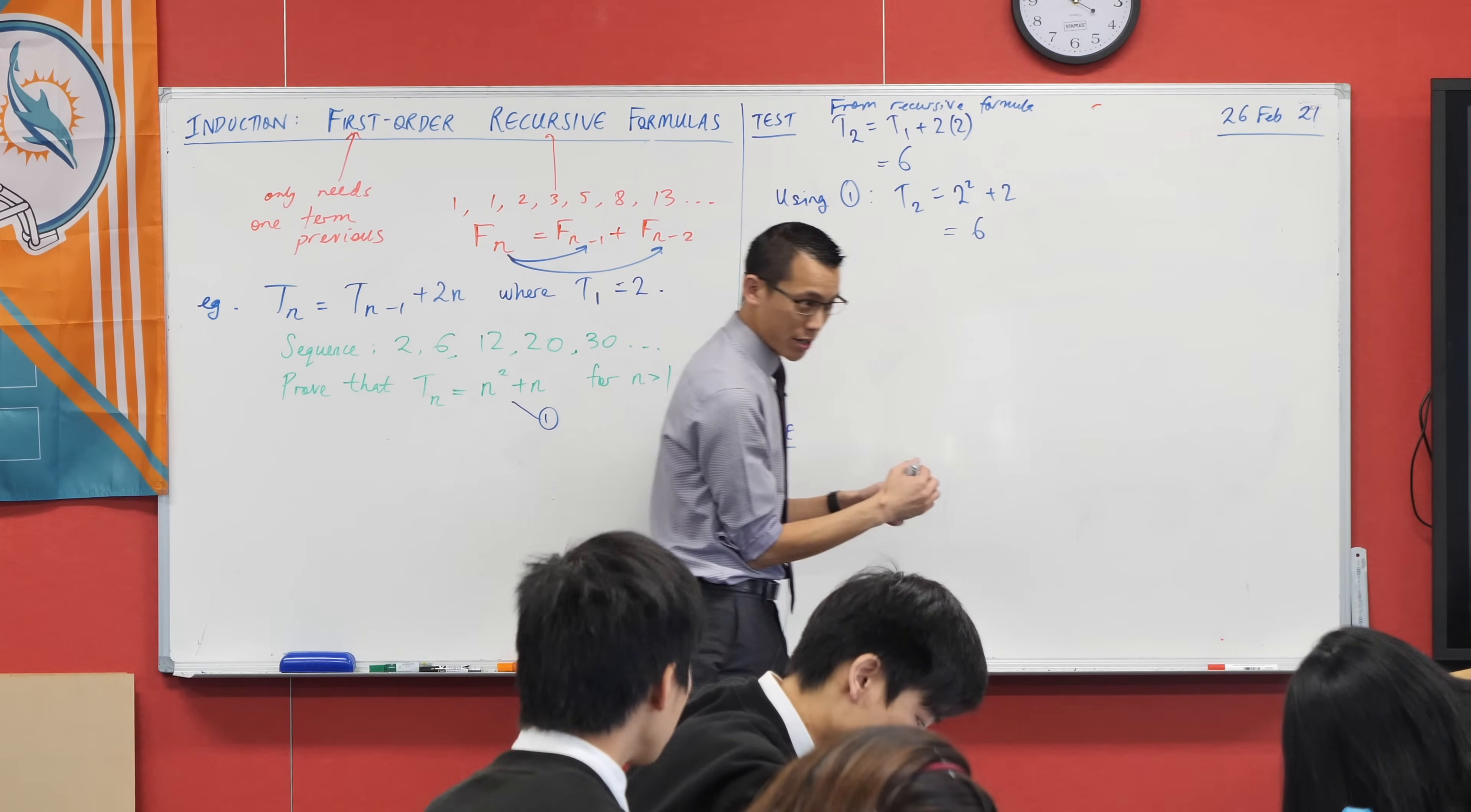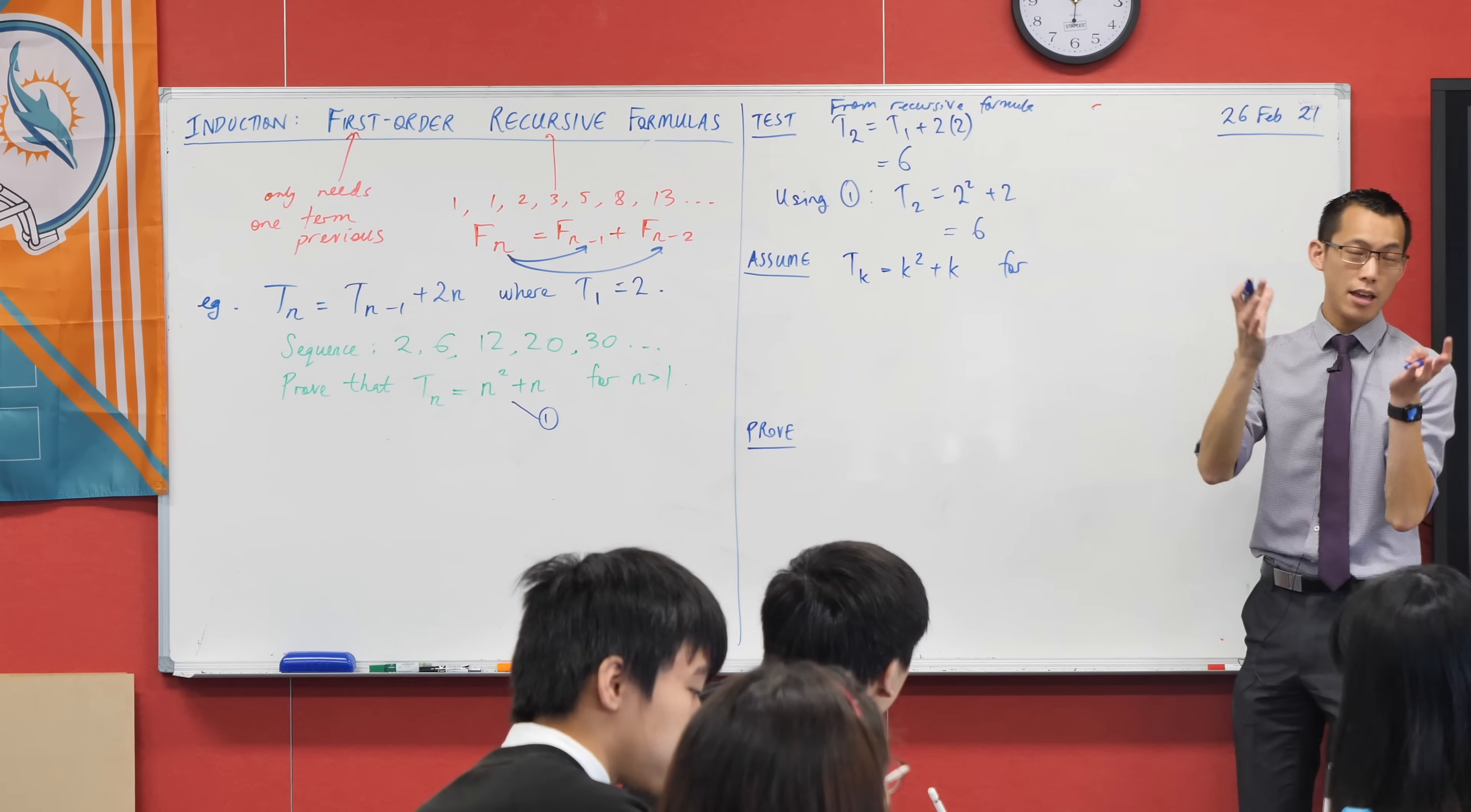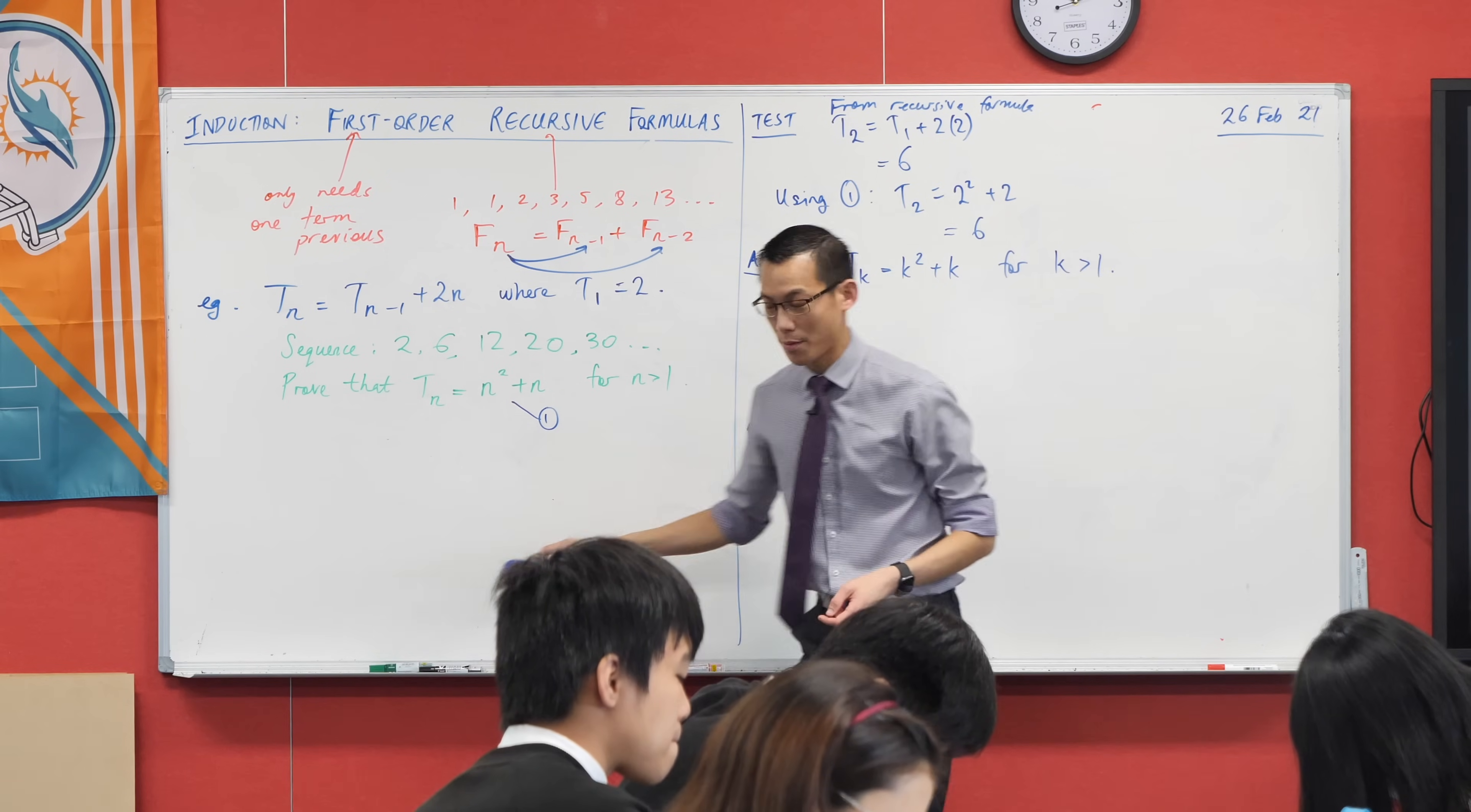Now we do our assumptions. So I'm going to assume that this actually does work for n equals k, so I'll just substitute in k squared plus k, and of course the same limitations or domain restrictions on n act on k as well. So I will say 4k is greater than 1. So far, so good. I've left way too much space for my assumed step. I should know better.